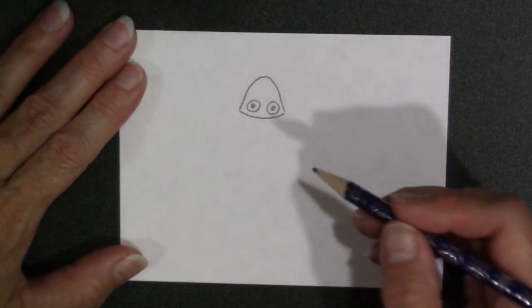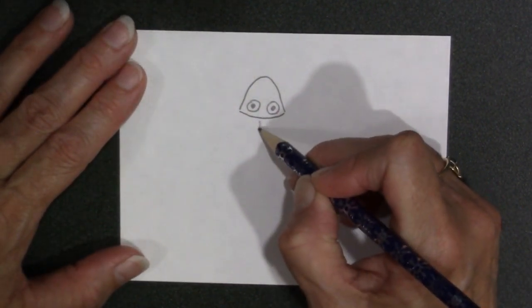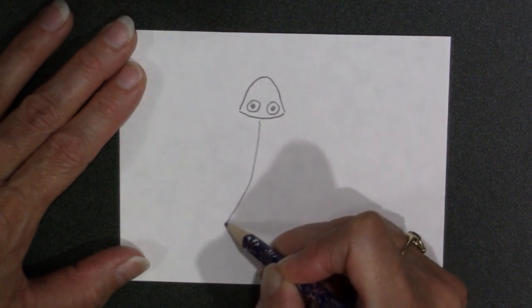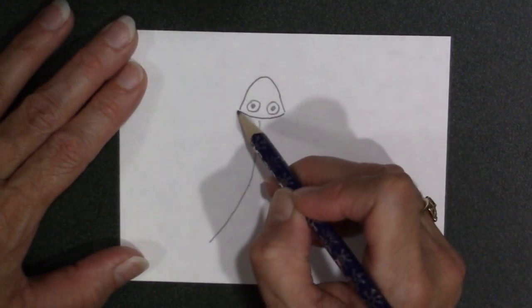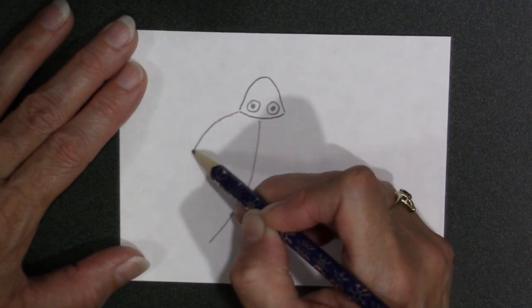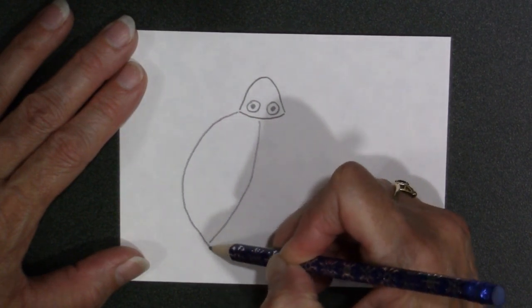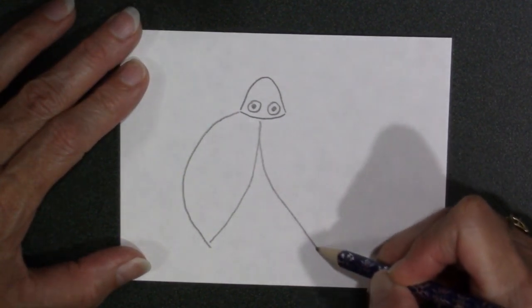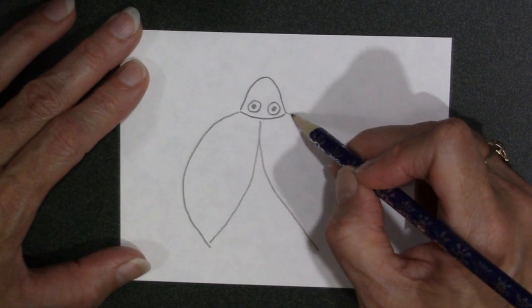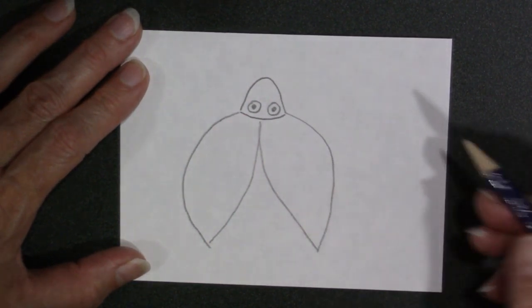Then you're going to draw a slightly bent to the left line that comes almost to the bottom of the paper. Go to the corner of that head shape and really curve it around. Then you're going to do the same thing on the other side. Really curve it around.